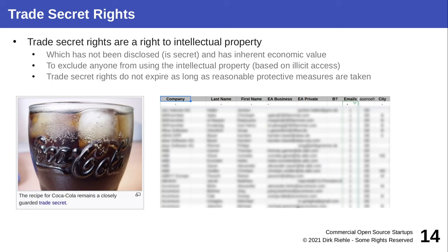Trade secrets are secrets. The most famous example is the Coca-Cola recipe or formula that has never been laid open. You can require that nobody uses your trade secrets — the only way they could is by stealing them, and that's what trade secret rights protect against. A more basic example: if someone leaves your company, takes the customer list, and starts calling your customers at a new company, they've stolen a trade secret. Using trade secret rights, you can stop them and sue them for that theft.